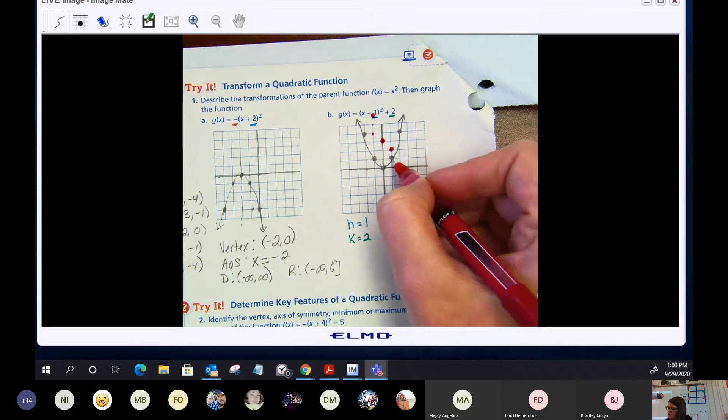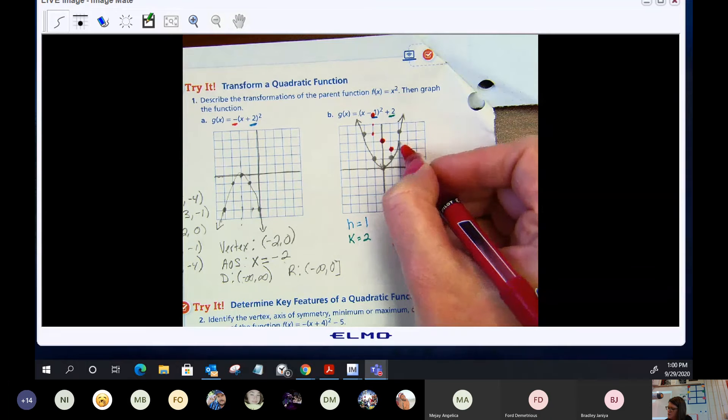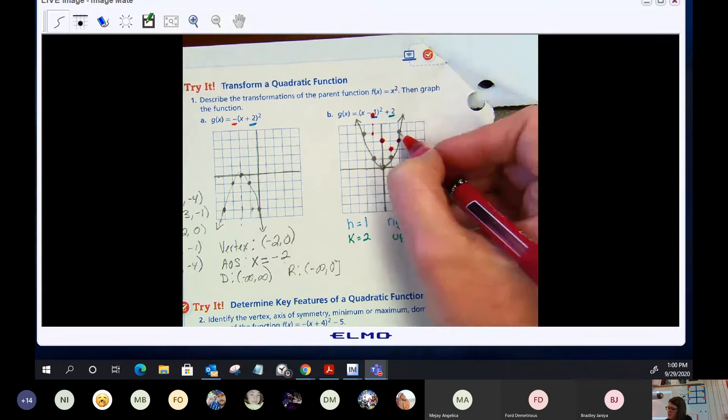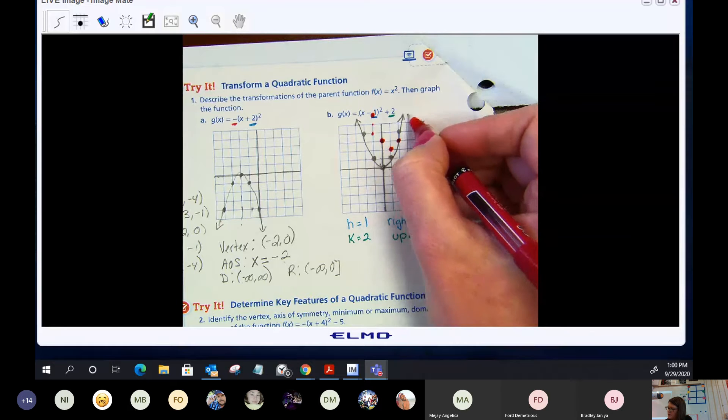Next point, right one, up two. Next point, right one, up two. I'm off the graph.